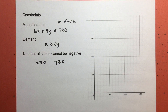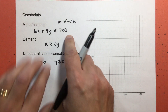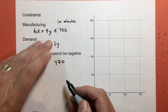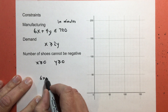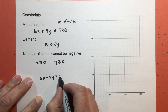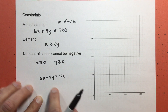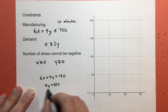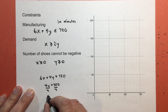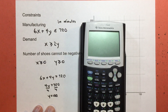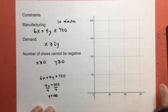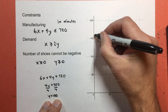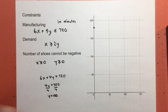Now we're going to graph these boundary lines and these inequalities. Starting with the manufacturing constraint boundary line: 6x + 4y = 720. If I let x equal 0, I get 4y = 720, so y = 180. That's my y-intercept at 180. If I let y equal 0, I get 6x = 720, so x = 120. That's my x-intercept at 120. I graphed this using the intercept method.